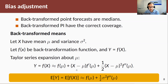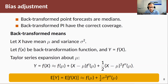We can take the expected value of that. The expected value of f(μ) is a constant, so it stays as f(μ). The expected value of the second term is zero because the expected value of (x − μ) is zero, since the expected value of x is μ, so μ − μ equals zero. For the third term, the expected value of (x − μ)² is the variance σ². So we get this resulting expression.